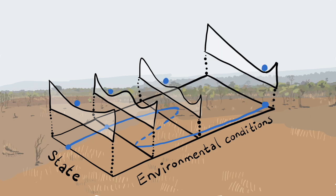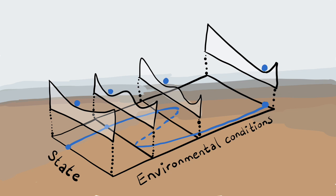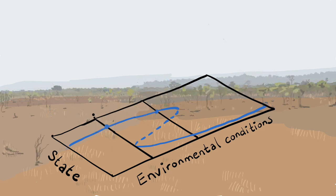A further change in environmental conditions might even remove the possibility of a vegetated state altogether. Close to this tipping point, the system is less resilient.